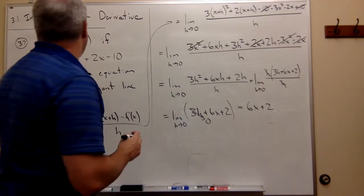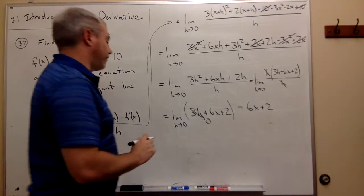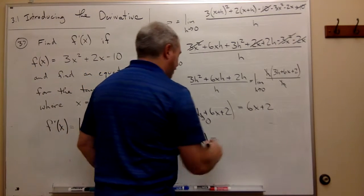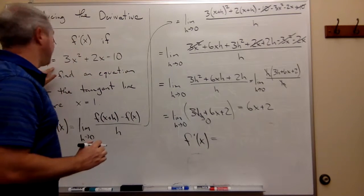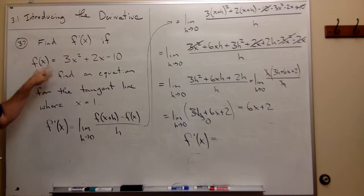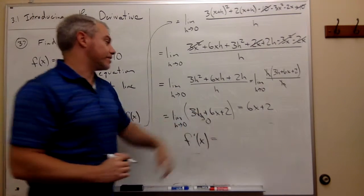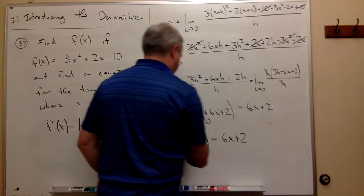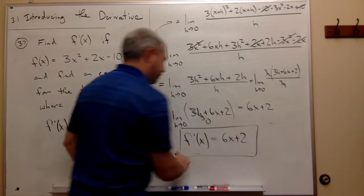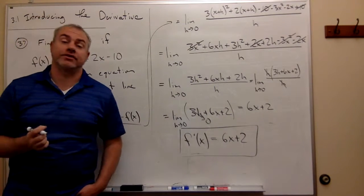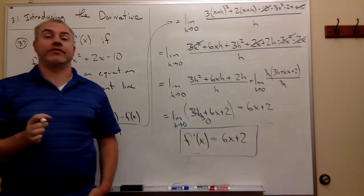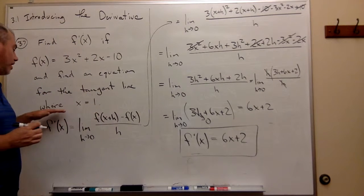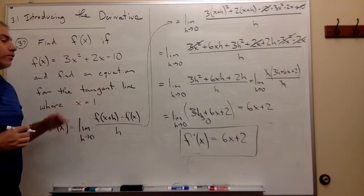I did all this work to find that f'(x), or the derivative of my function f(x), that the derivative is 6x + 2. That's the first part of the answer. The second part is can we find the tangent line where x = 1.